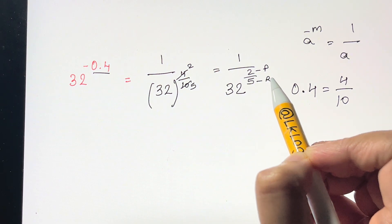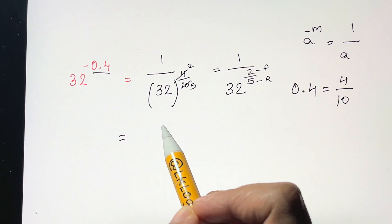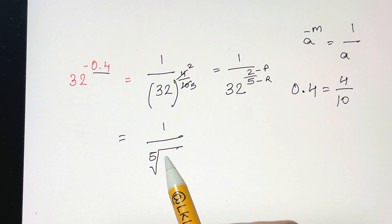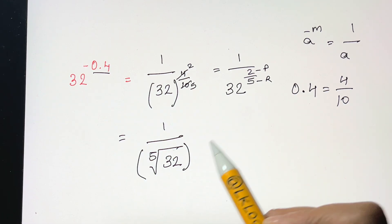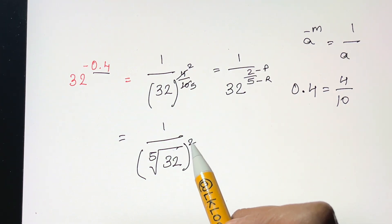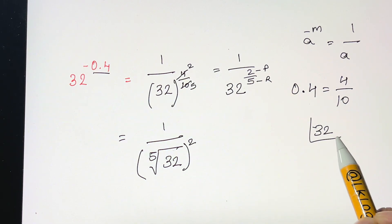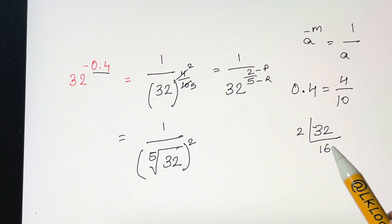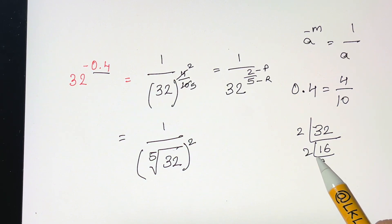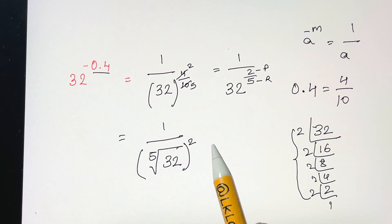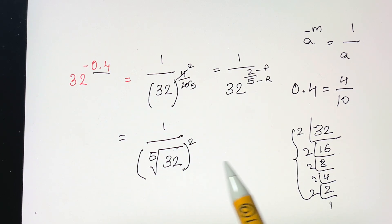Here 2 is the power and 5 is the root. Converting, we get 1 over the fifth root of 32, raised to the power of 2. To find the fifth root of 32, take the LCM: 32 = 2×16 = 2×2×8 = 2×2×2×4 = 2×2×2×2×2. That's five 2s, so the fifth root of 32 is 2.